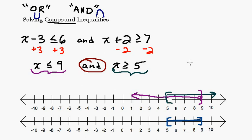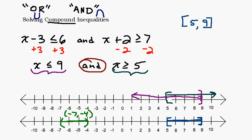In interval notation, starting at 5 going up to 9 with hard brackets: [5, 9]. Always write your smallest number first. Be careful not to confuse interval notation with an ordered pair — for example, (-7, -4) in interval notation looks exactly like a coordinate point. The way you know which one it is, is by the context of the problem.